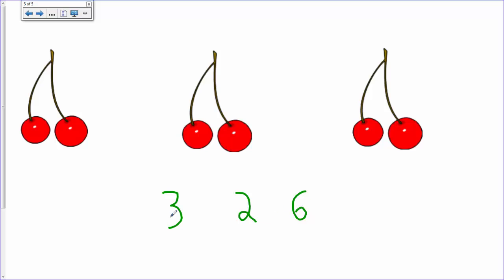So, we would have three times two equals six. Three groups of cherries with two in each group equals six.